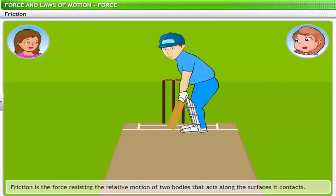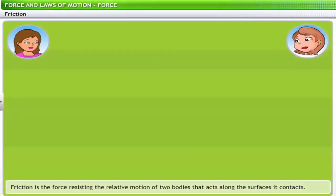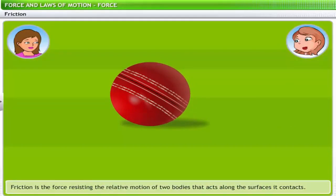Let's observe a game of cricket. The ball, when hit by the batsman, slows down and stops after rolling a certain distance. Do you see any force being applied to stop the ball? No — ideally the ball shouldn't stop since no one applied any force to stop it. The ball stopped due to a force called friction.